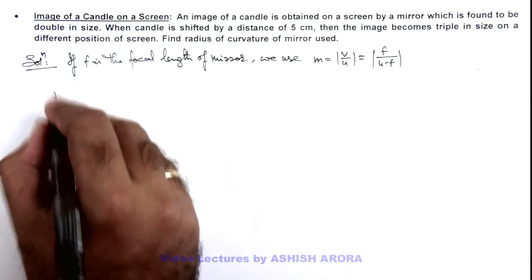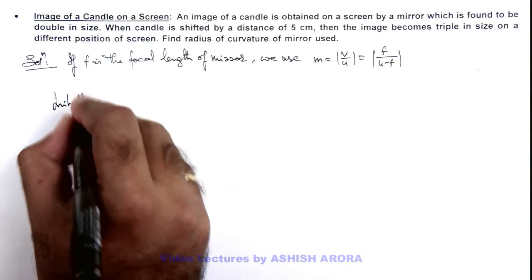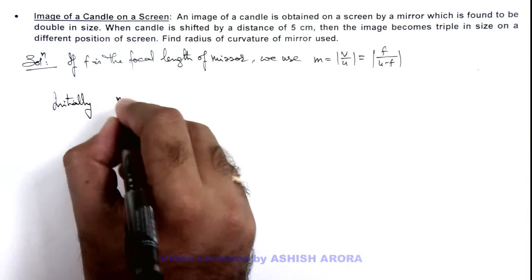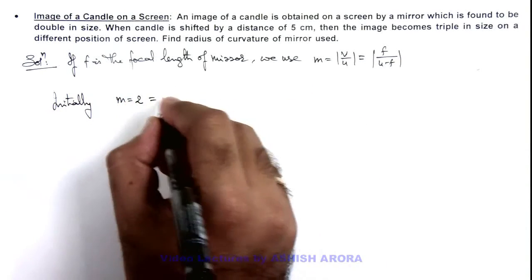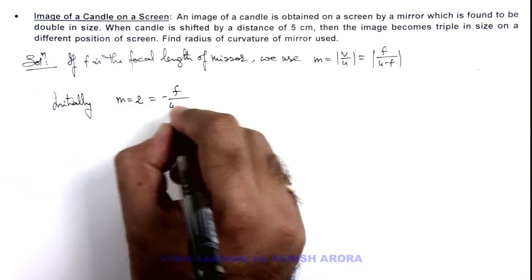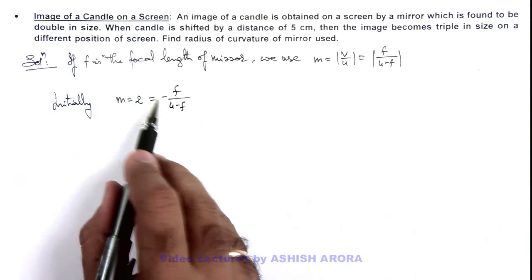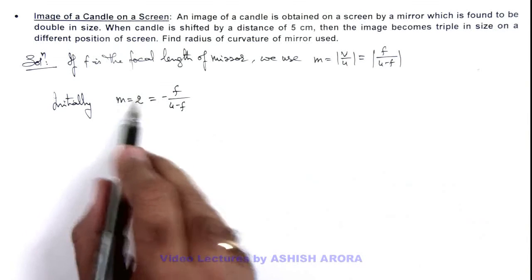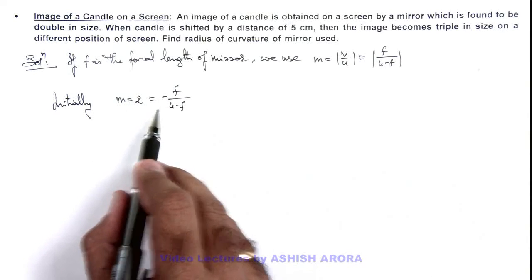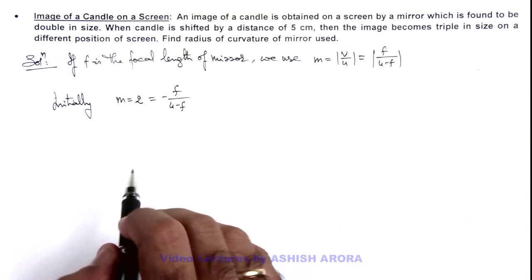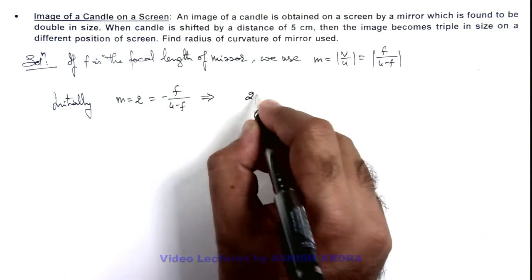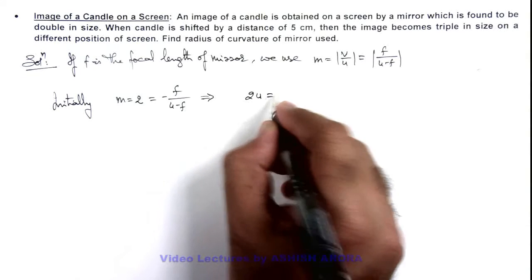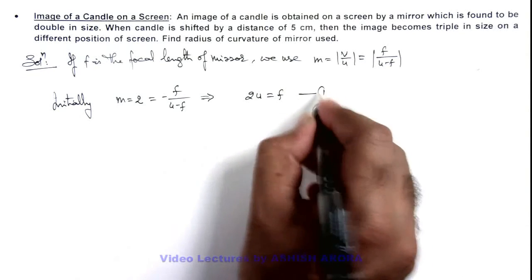So here we can write, initially the magnification is equal to 2, which can be taken as minus f by u minus f. Students must be clear why I am taking the minus sign, because it is a magnified image, so the value of u must be less than f. In this situation, if we simplify, this will give you 2u is equal to f. That is the first equation.